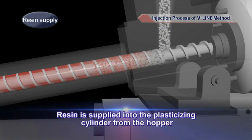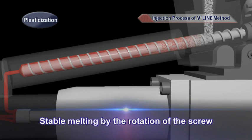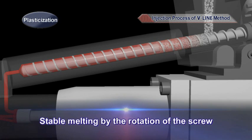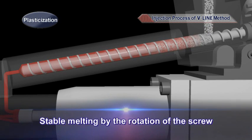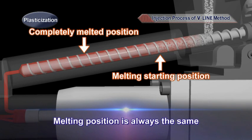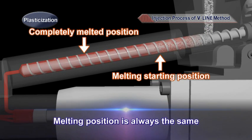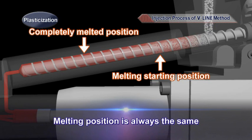The resin is supplied into the plasticizing cylinder from the hopper. The resin passes through the plasticizing cylinder by the rotation of the plasticization screw. While passing through, the resin is stably melted because the melting starting position and the completely melted position are always the same.